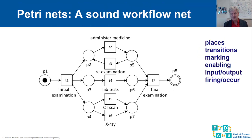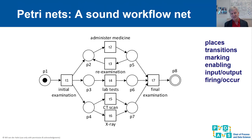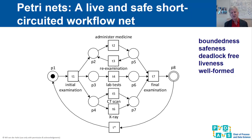When we have a workflow net with a clear start and end, to look at notions like well-formedness, we typically short-circuit the net. If there is a token in P8 we are in a deadlock, so the net is not deadlock free and not live. By short-circuiting we create a net that is strongly connected and well-formed.